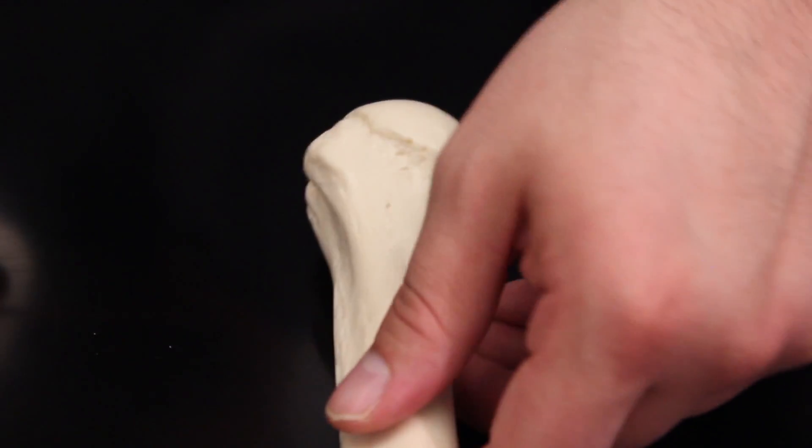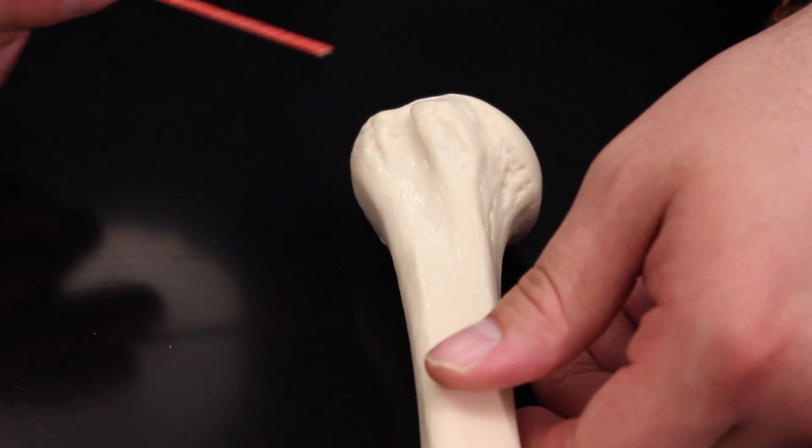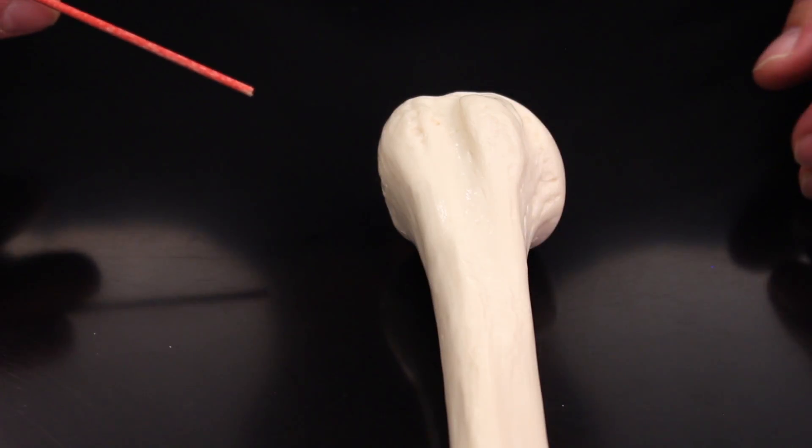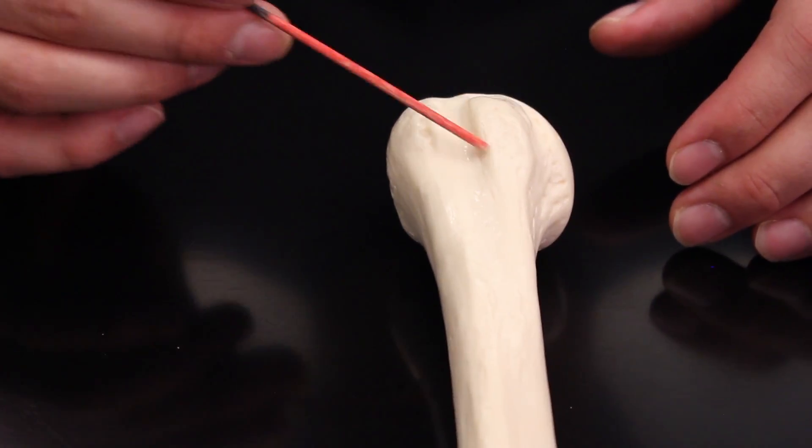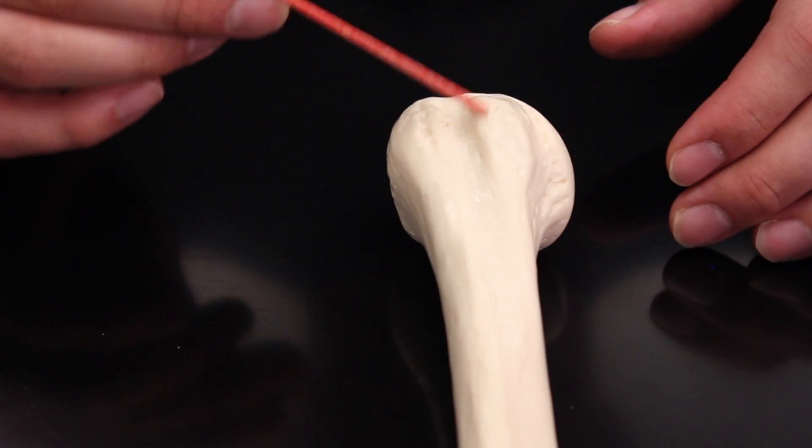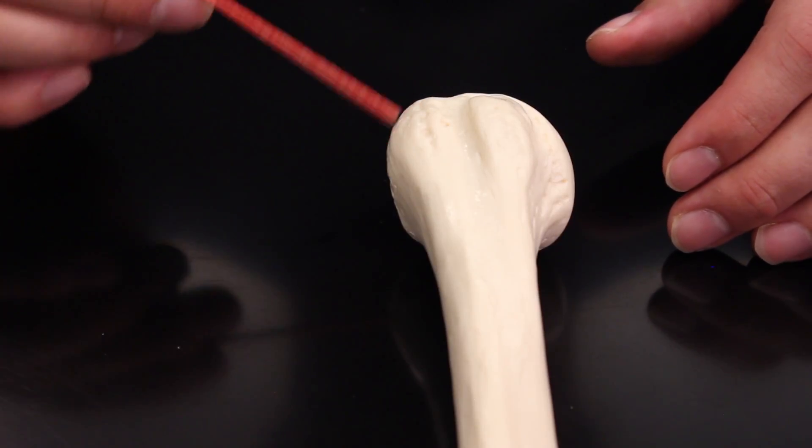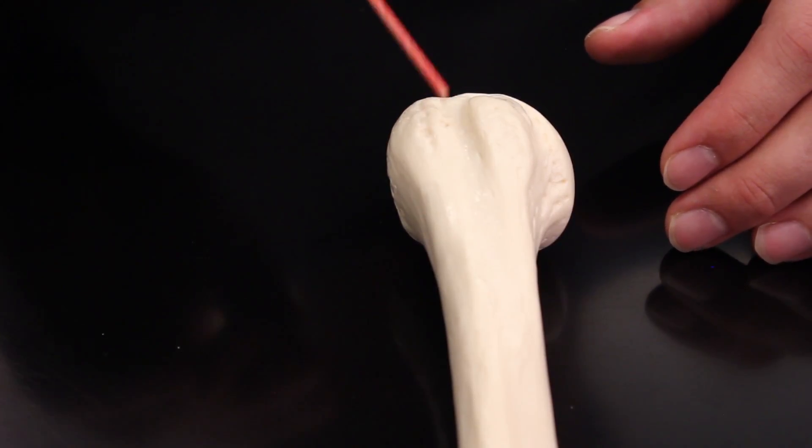Alright, so that covers the head. Now I'm going to cover this other part of the proximal epiphysis here. At the proximal epiphysis, we have this structure here called the lesser tubercle. This one right here is the greater tubercle. This right here is the intertubercular sulcus.